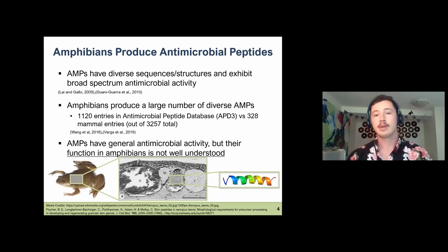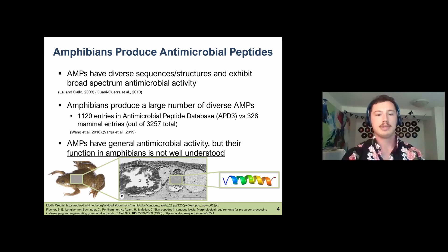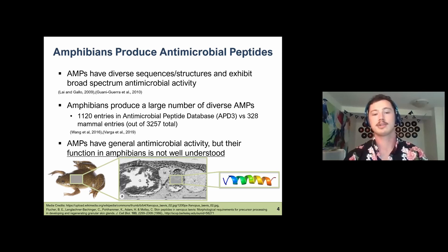Amphibians are known to produce a diverse array of antimicrobial peptides—actually more than mammals, despite mammals being more heavily studied. While these AMPs have shown general antimicrobial activity, particularly against human pathogens and common model organisms, their function in amphibians is often not well understood. We believe they may be helpful in defense against these emerging pathogens, but that data is often unclear.